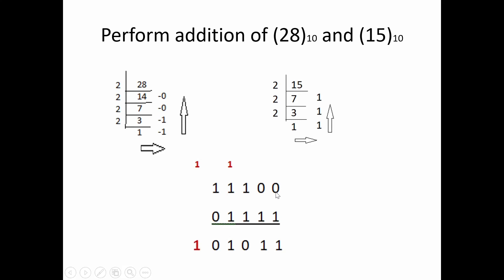So the addition of 11100 and 01111: 0 plus 1 is 1, 0 plus 1 is 1, 1 plus 1 is 0 with carry 1, and adding three ones gives 1 with carry.